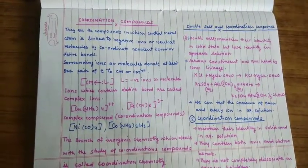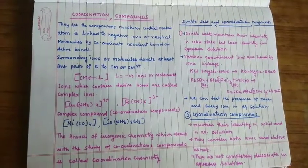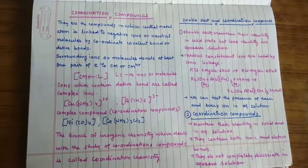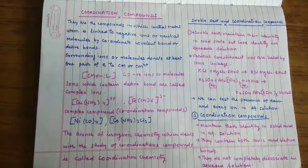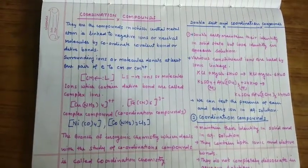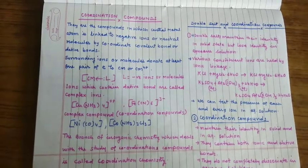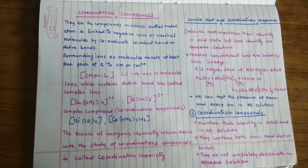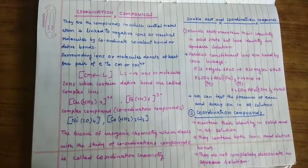Coordination compound को पहले complex compound कहा जाता था क्योंकि जो nature of bonding coordination compound में होता है कि दो stable compounds कैसे जुड़ते हैं ये उस समय पता नहीं था। Now they are called coordination compound.